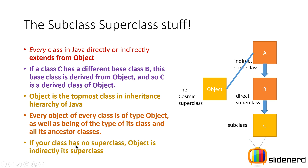If your class has no superclass, Object is indirectly the superclass. For example, if you wrote 'class A extends Object,' then Object would be directly the superclass of A. But if you simply wrote 'class A' in your Java program without specifying anything, Object is going to be indirectly the superclass of A. Hopefully that's clear.